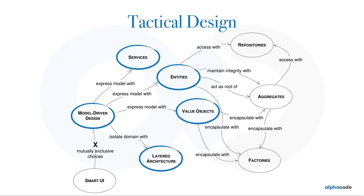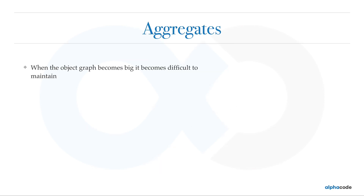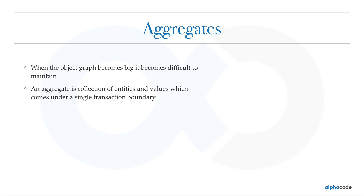Now let's move on to aggregates. If you want to take away two things from tactical design, that would be value objects and aggregates. When you have the object graph of your project and it becomes big, it becomes difficult to maintain. An aggregate is a collection of entities in your object graph which comes under a single transaction boundary.